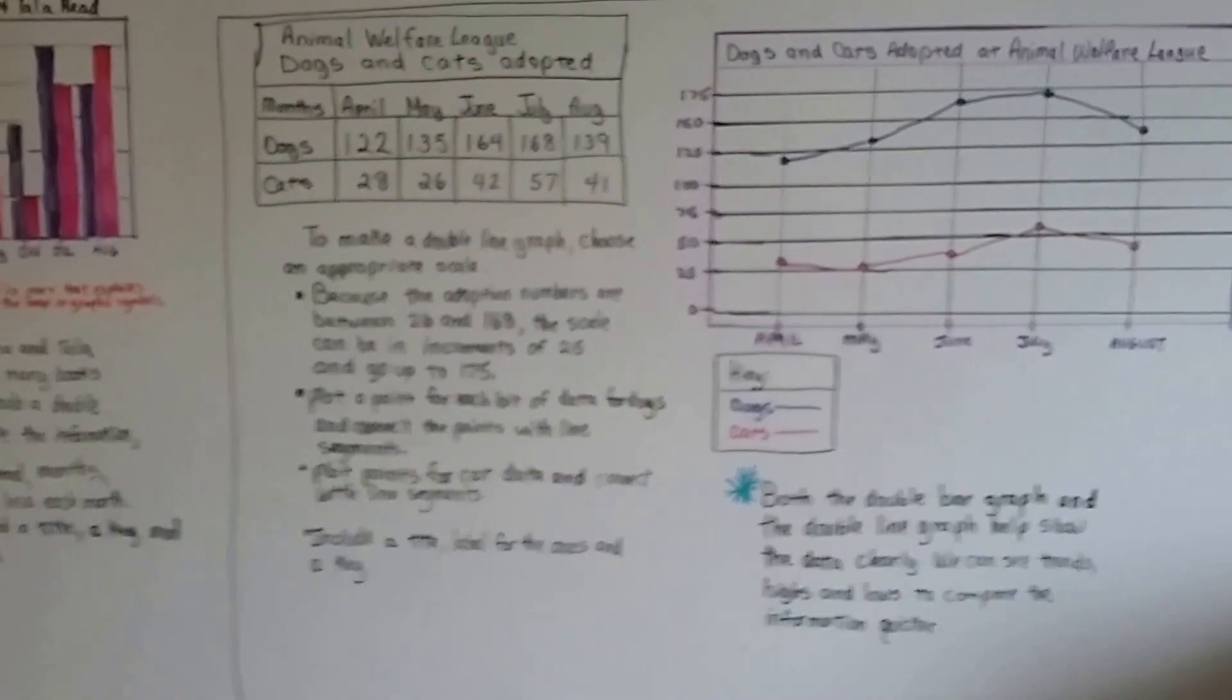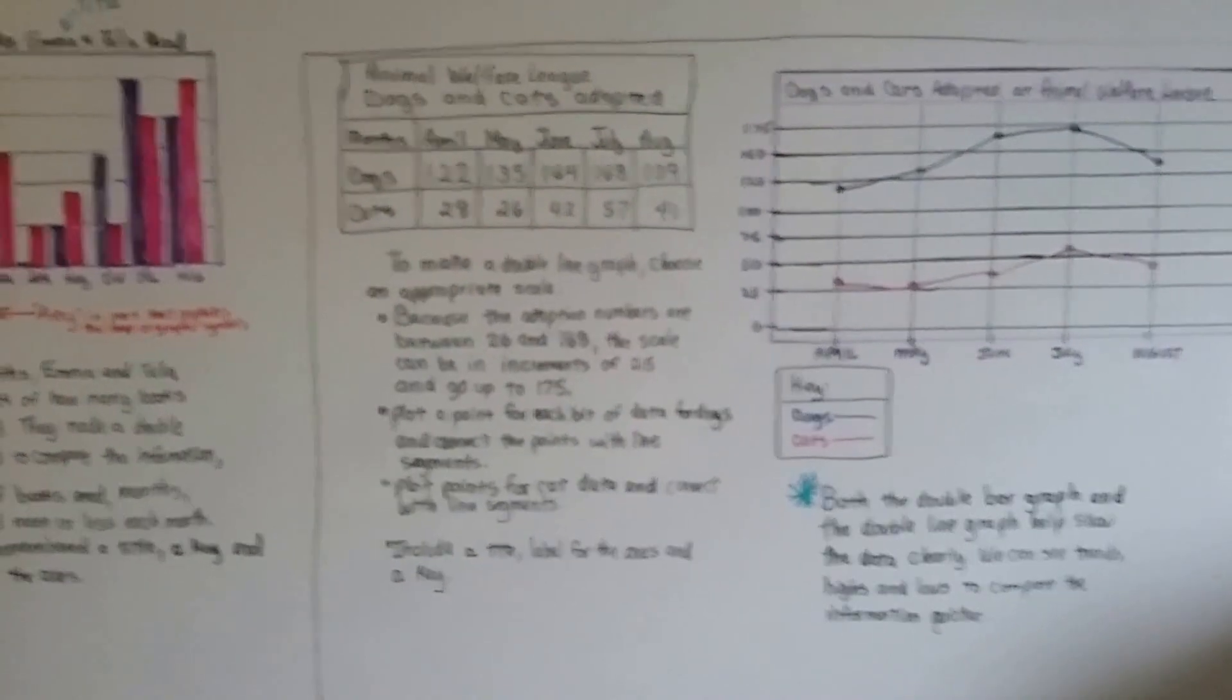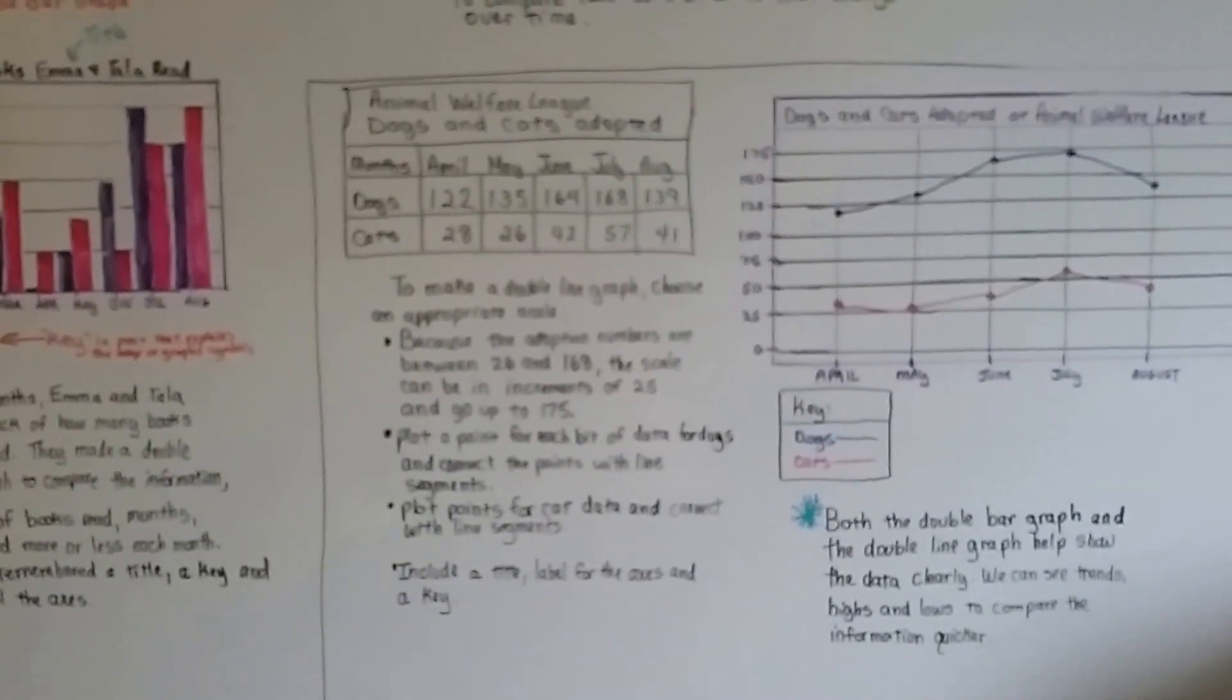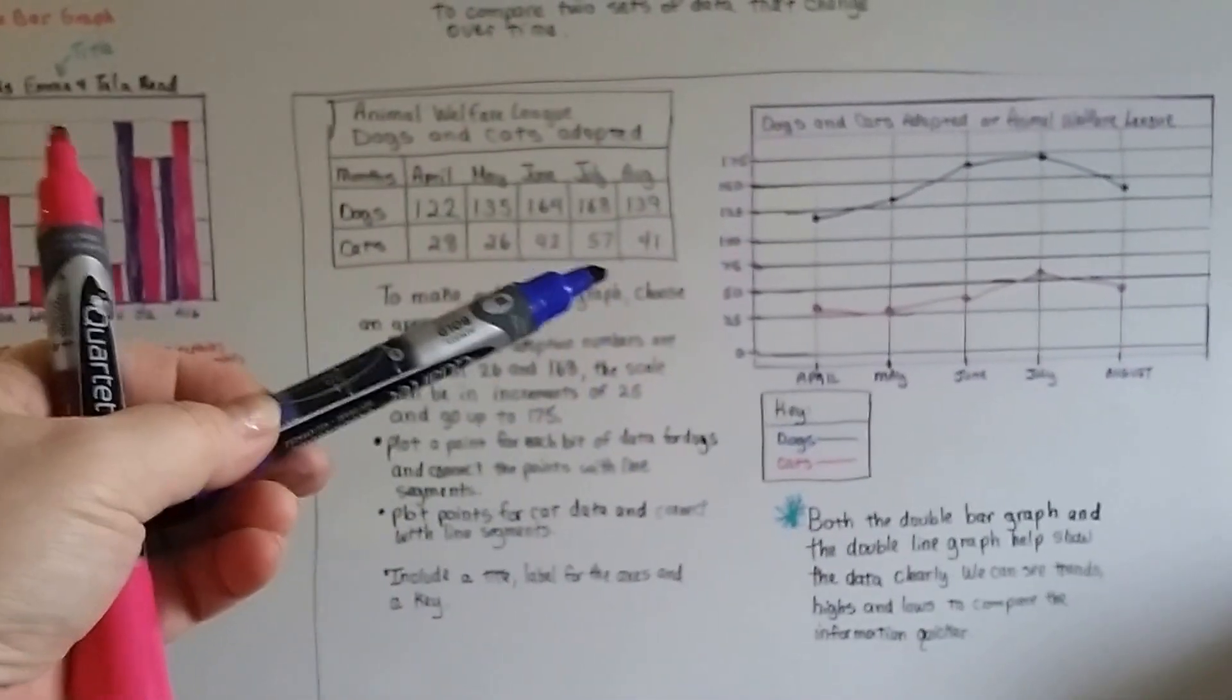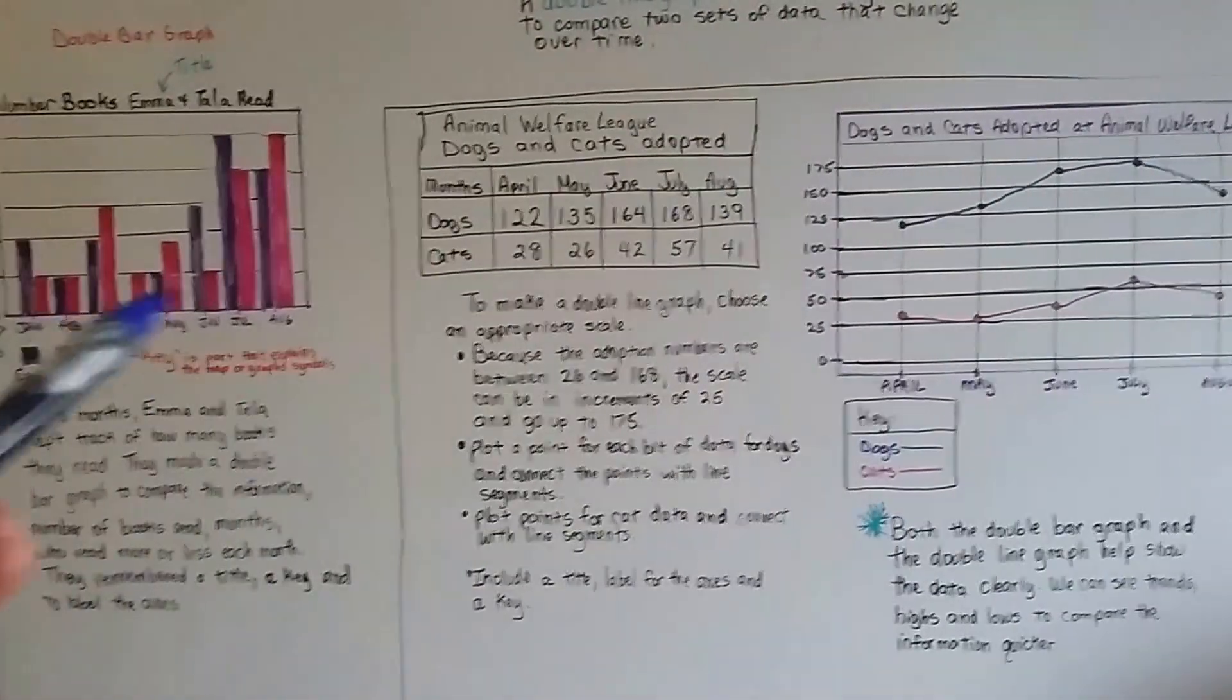So both the double bar graph and the double line graph help show the data clearly, and we can see trends, highs and lows, and compare the information to each other. It's easy now to compare the dogs and cats to each other, or how many books they read.